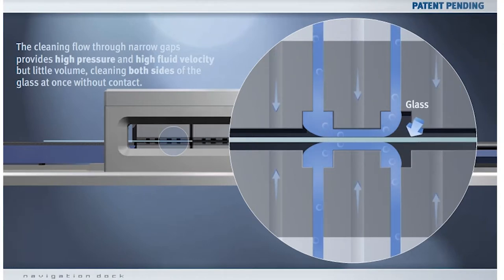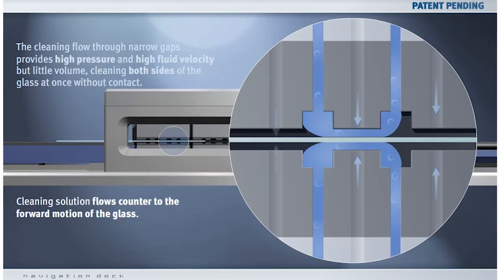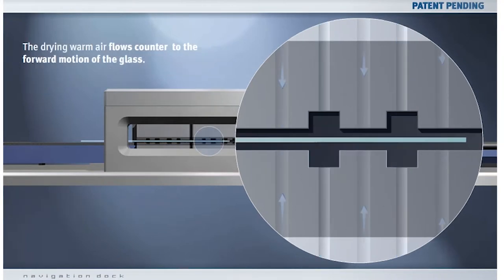So this high velocity, high pressure flow of cleaning agent has a very effective boundary layer scrubbing and cleaning effect on both surfaces of the glass at the same time.